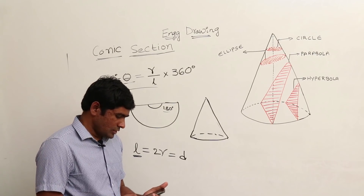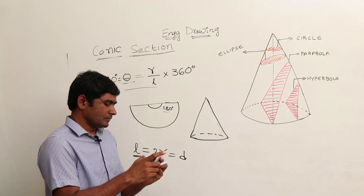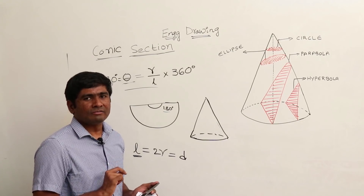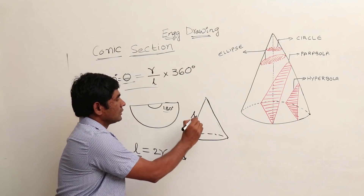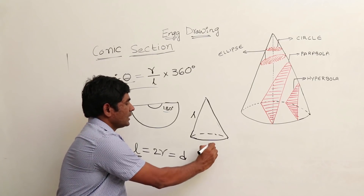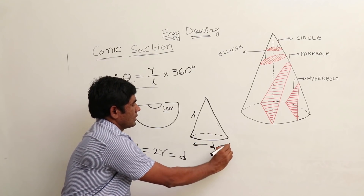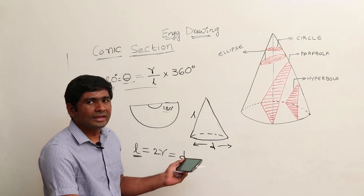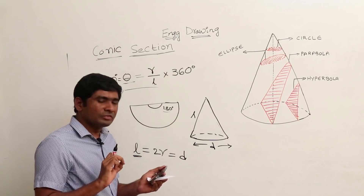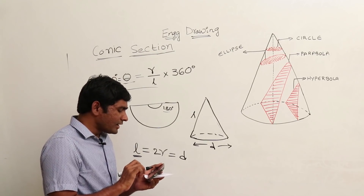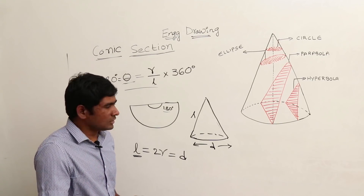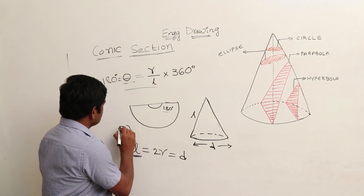Now let's read the options. The first option is: the slant height of the cone is less than the diameter of the base of the cone — that is wrong. The second option: slant height greater than diameter — also wrong. The third option: slant height L equal to diameter D — and since we derived L equal to D, option 3 is correct.